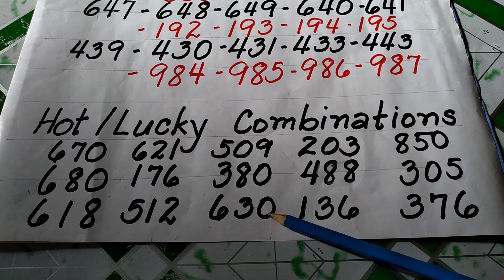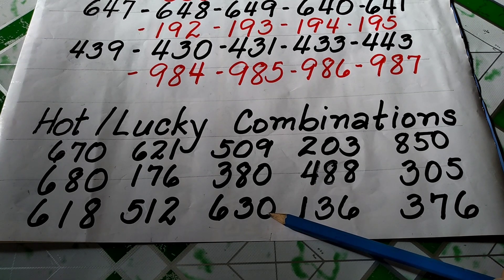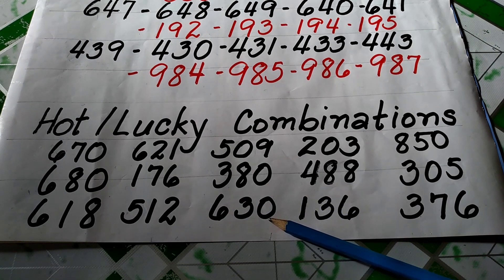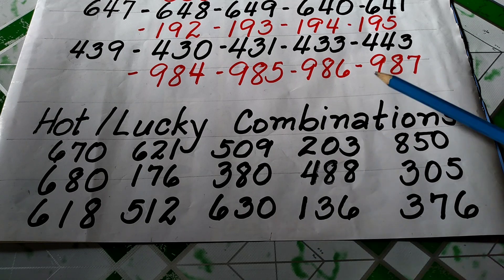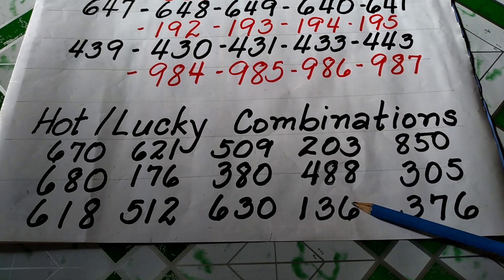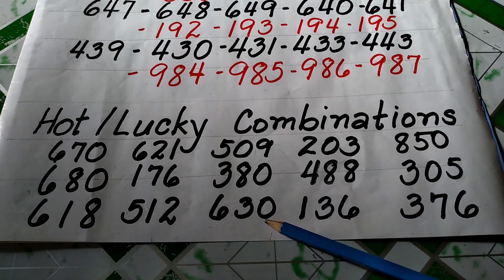Tapos, ito yung root numbers sa 3-6-6 na lumabas sa STL-M kagabi. Ang double 3-6-6, ito ang root number. Tapos, meron tayo dito, 2-0-3, 1-4-8, 1-3-6. 1-3-6, ito ay slide kombinasyon nito.